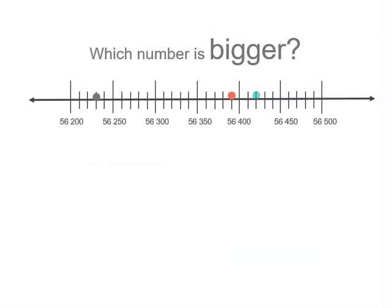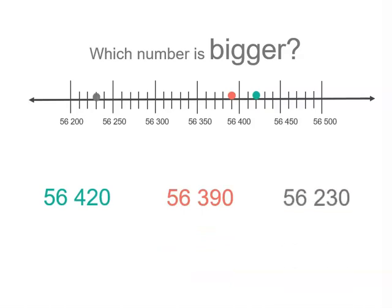Now we actually want the bigger number. So we want the dot furthest to the right, and that's 56,420, which was baseball. The next one was 56,390, which was basketball, and the one with the smallest crowd was actually soccer, 56,230.